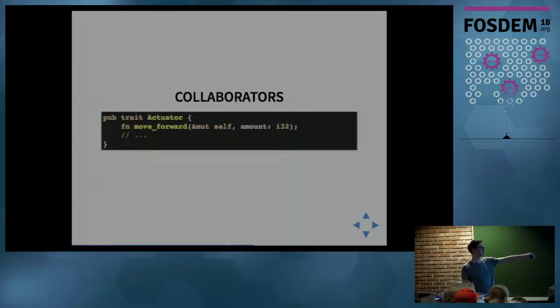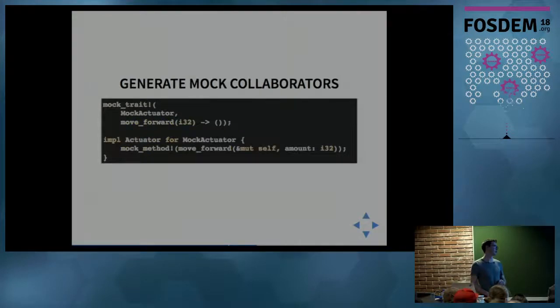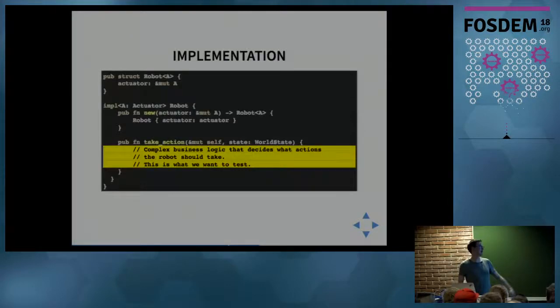If this actuator was a trait with many actions, one being move_forward, it would have lots more nuanced actions, but for illustration it has move_forward that moves forward by some amount. We mock this as before using mock trait and impl actuator for mock actuator. The robot itself takes a reference to the actuator and has this take_action function which receives some world state. There's some business logic on how the robot decides what actions it should take. This is the thing we want to test.